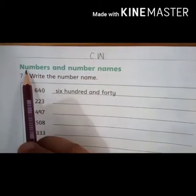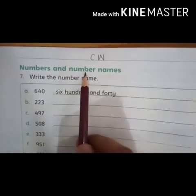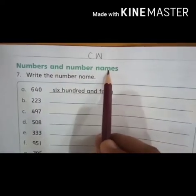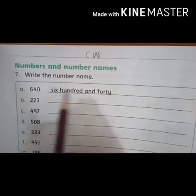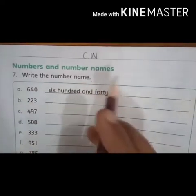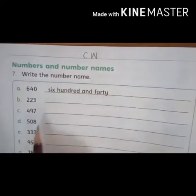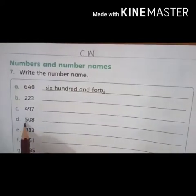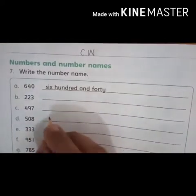Students, look at page number 14: numbers and number names — numbers aur number ke naam. Six four zero: six hundred and forty — this is done for you. Now look at part D: five zero eight.